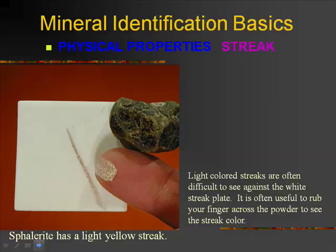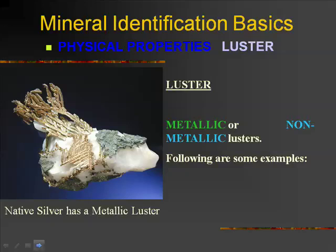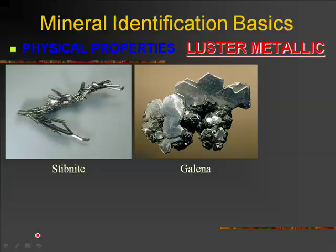The luster. We're going to divide all minerals into two groups: metallic and non-metallic lusters. It sounds easy — if it looks like a metal, it must be metallic — but it does take a bit of experience to realize the difference between metallic and simply shiny. As you might guess, silver is metallic. Stibnite and galena look shiny, but shiny in a metal kind of way, not like glass is shiny.